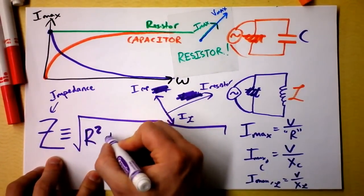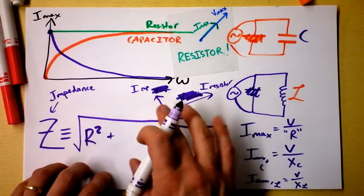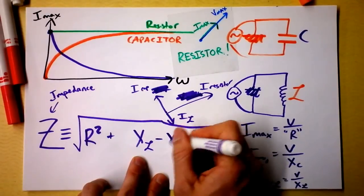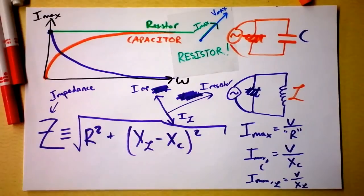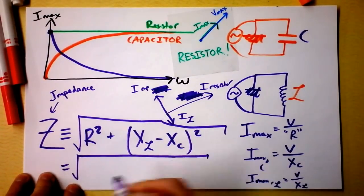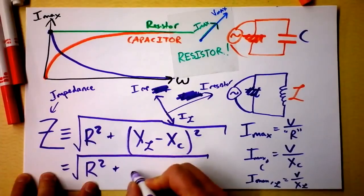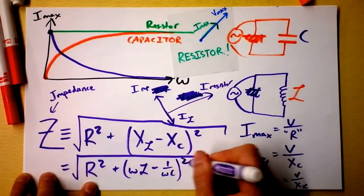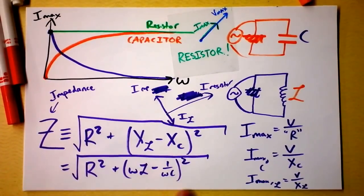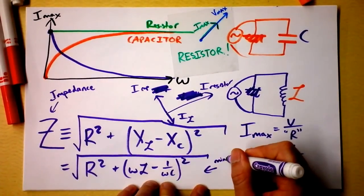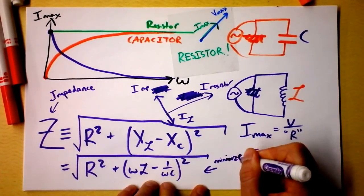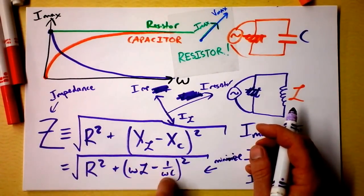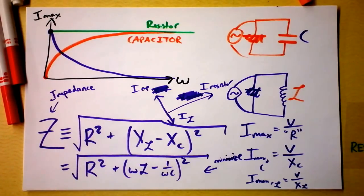The impedance Z equals the square root of R squared plus (omega L minus 1 over omega C) squared. Something beautiful happens when this is minimized: if omega L equals 1 over omega C, the impedance reduces to exactly R. This is the resonance condition — you'll have to wait to find out more, or maybe you can go find out now.